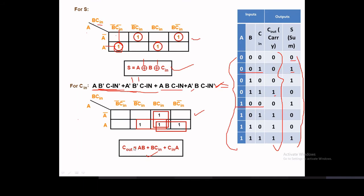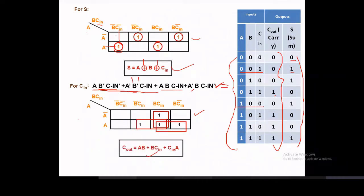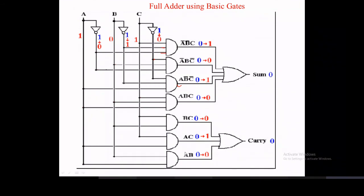For the carry circuit, the carry equation is C-out = A·B + B·C + A·C. B·C is implemented by feeding B and C into an AND gate; A·C uses A and C; A·B uses A and B. The outputs of these three two-input AND gates are fed into an OR gate to produce the carry output.